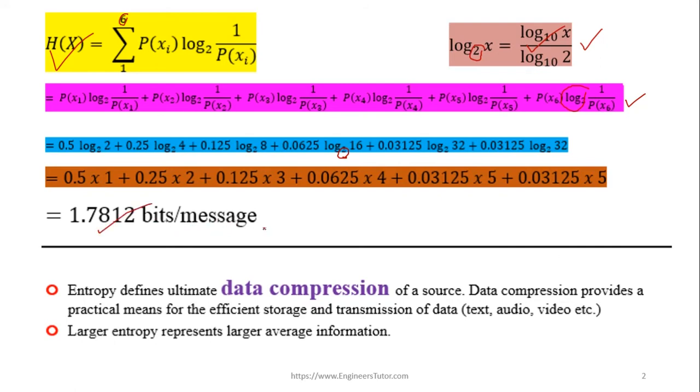Finally you get 1.78 bits per message. This is the entropy or average information of a source. Entropy defines ultimate data compression of a source. This is the physical significance of the entropy. Entropy, why we calculate average information.